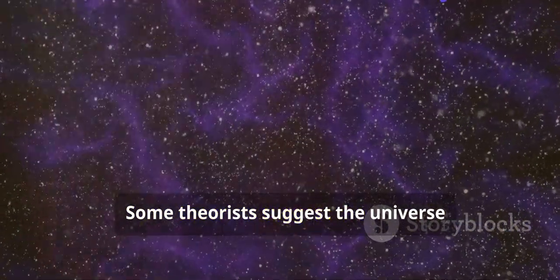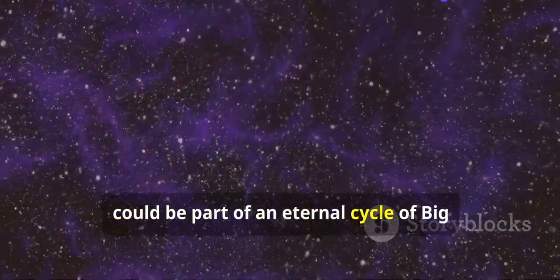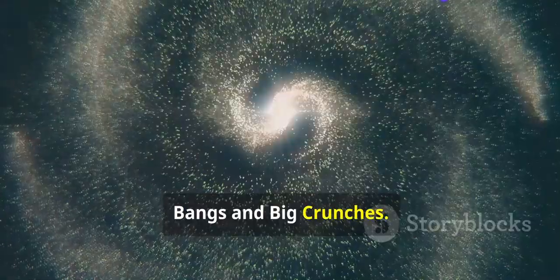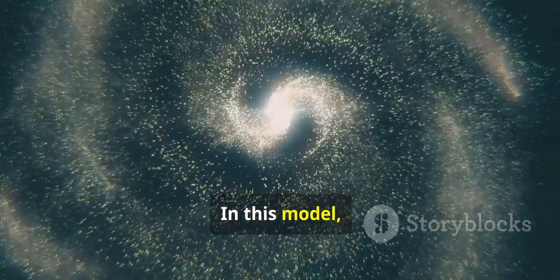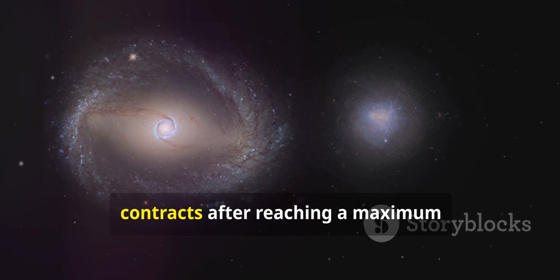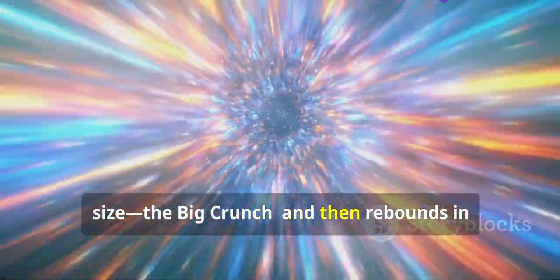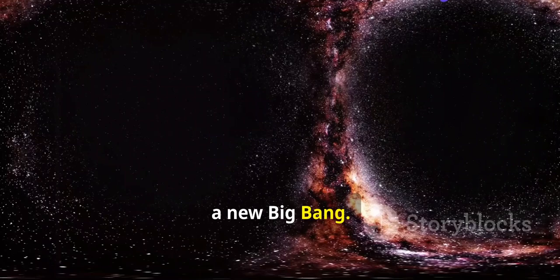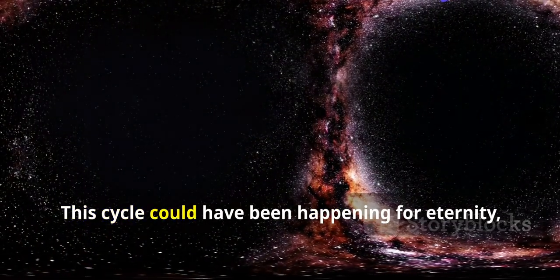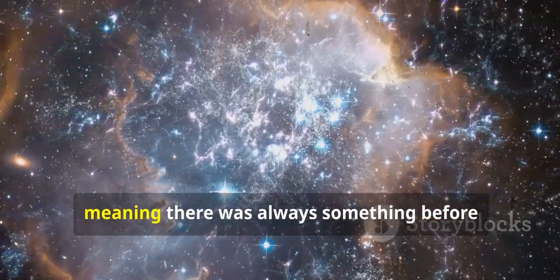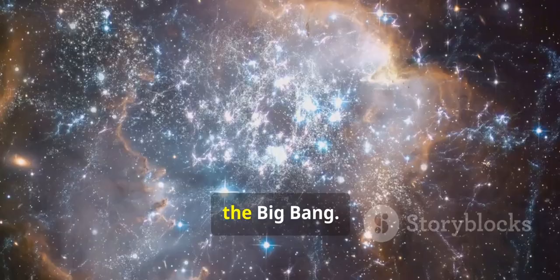Some theorists suggest the universe could be part of an eternal cycle of Big Bangs and Big Crunches. In this model, the universe expands from a Big Bang, contracts after reaching a maximum size (the Big Crunch), and then rebounds in a new Big Bang. This cycle could have been happening for eternity, meaning there was always something before the Big Bang.